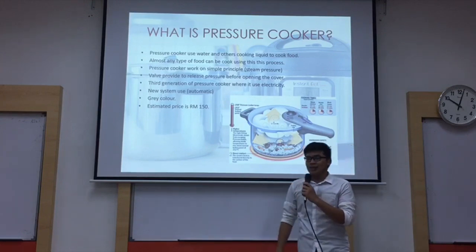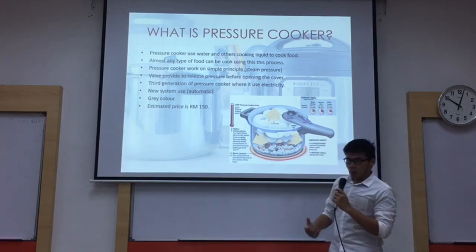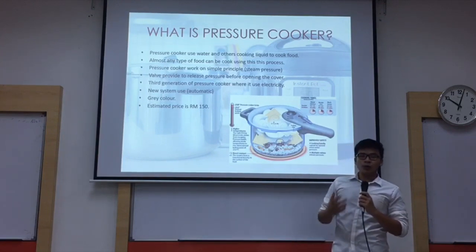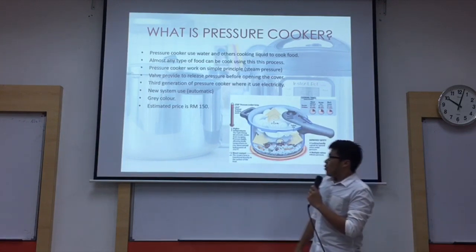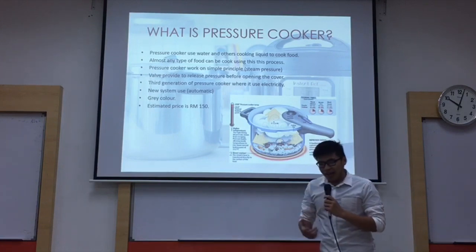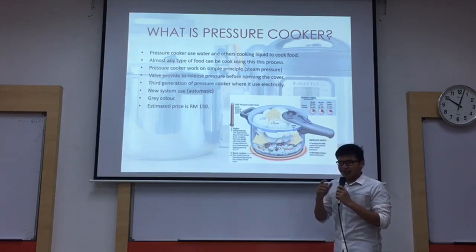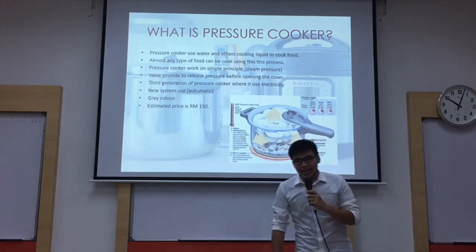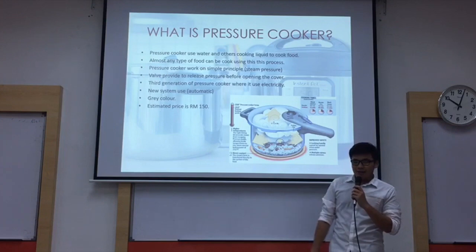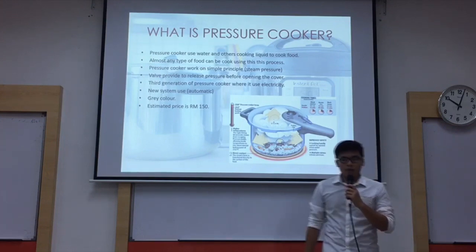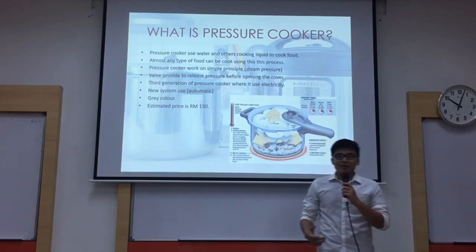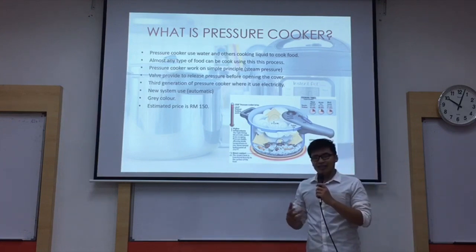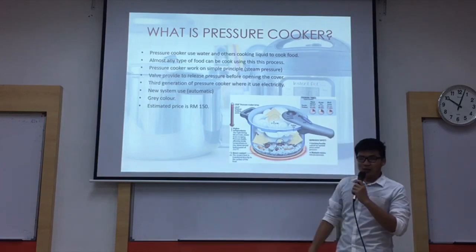Our pressure cooker also uses a new system which is automatic. You can set the timer and you can also choose what type of food you want to cook. We chose the color green because it is cheaper compared to the larger color, and the estimated price is 150 ringgit. Compared to other pressure cookers that cost around 400 ringgit, it's very expensive. So for the budget-conscious who want to try how to use a pressure cooker, you can choose our pressure cooker first.